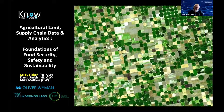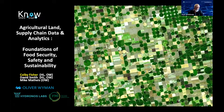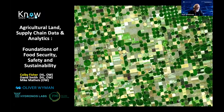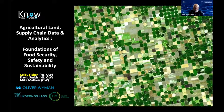We'll hear from Ana Lopez Carr, who's the Monitoring and Evaluation Specialist at Direct Relief, about how the Nowhere Graph assists direct relief personnel in identifying experts to consult with in the case of impending or ongoing disasters. Then you'll hear from Dr. Colby Fisher of Hydronos Labs and Oliver Wyman, who will describe how Nowhere Graph is working with partners in the farm and food industries to semantically link diverse data with geospatially detailed information about food and crop security and safety — for example, how climate change might impact crop production in different regions.